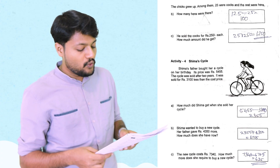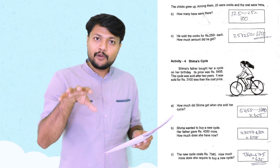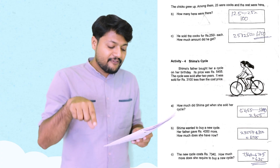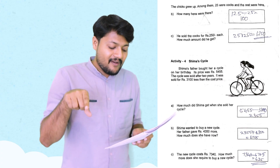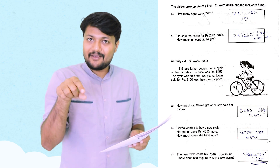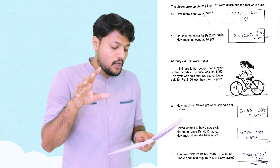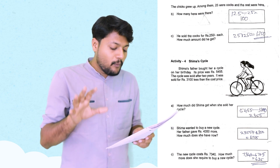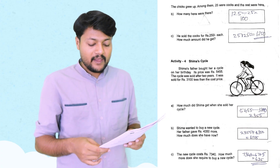Ready? At least, Shima wanted to buy a new cycle. Her father gave Rs. 4,350 more. How much does she have now?